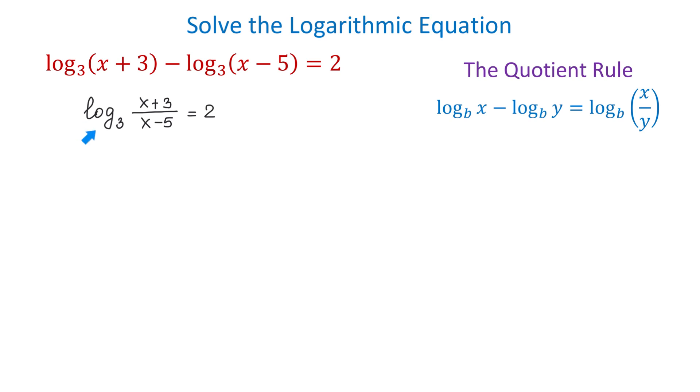Now, once we have a single logarithm on one side, we will rewrite this logarithmic equation in exponential form. That will be x plus 3 over x minus 5 equals base 3 raised to the second power. So again, in this logarithmic equation, if we raise base 3 to the second power, we will get the result x plus 3 over x minus 5.